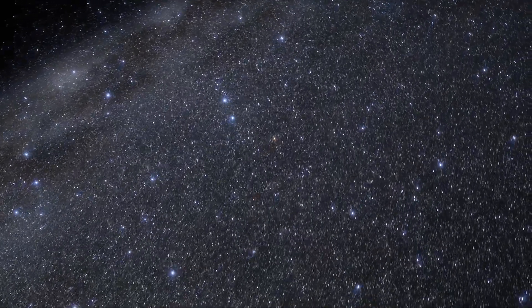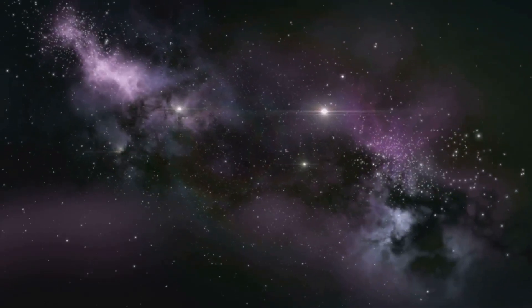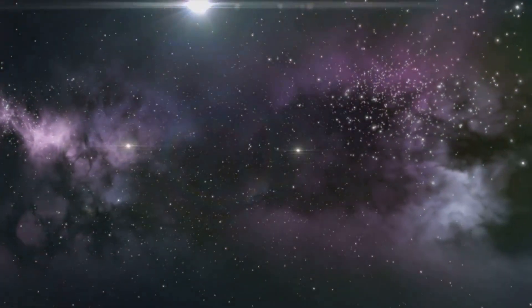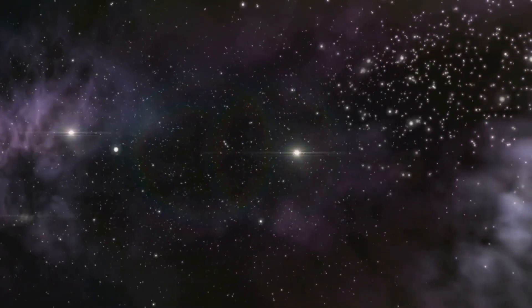In roughly 5 billion years, our own sun will exhaust its nuclear fuel and expand into a red giant, eventually shedding its outer layers and leaving behind a white dwarf.